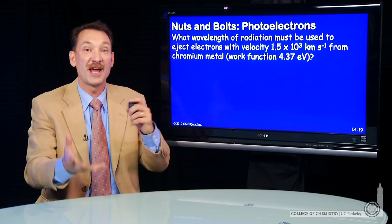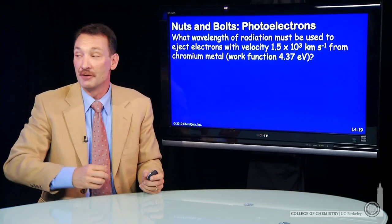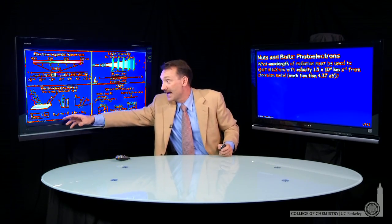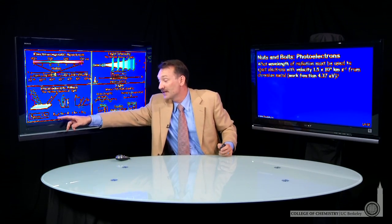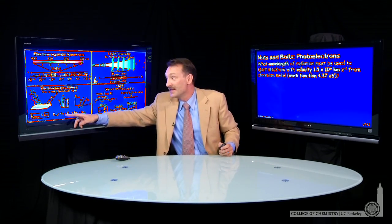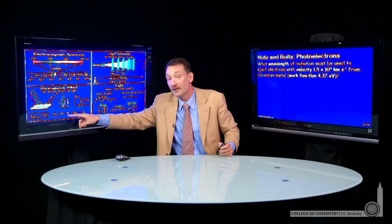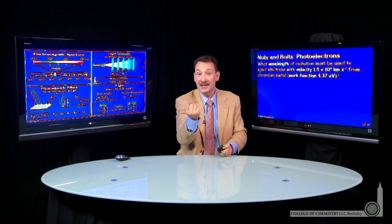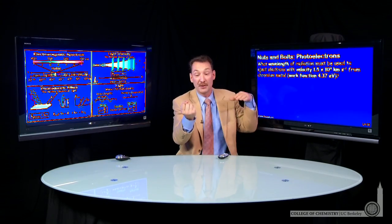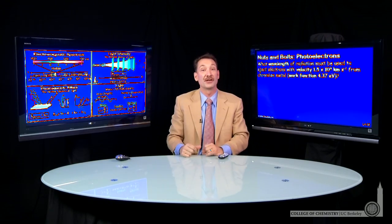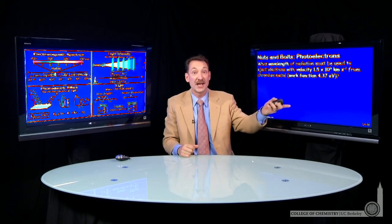The photoelectric effect, we have to balance the energies. Remember, the photoelectric effect has the kinetic energy of the electron is the photon energy minus the work function for the metal. So the metal holds on to the electron, but if we bring in a high enough energy photon, we can eject an electron with a certain kinetic energy. So that's what we have to find.